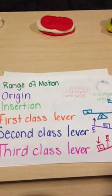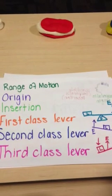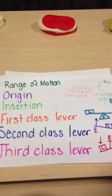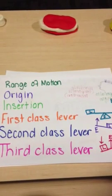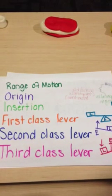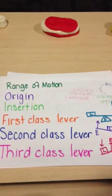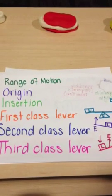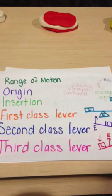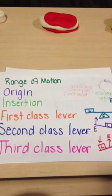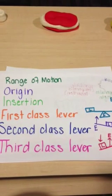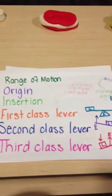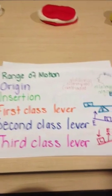A first class lever is when the fulcrum is placed between the load — an example is the seesaw. A second class lever is when the load is between the effort and the fulcrum — an example is the wheelbarrow. A third class lever is when the effort is between the load and the fulcrum — an example is scissors.